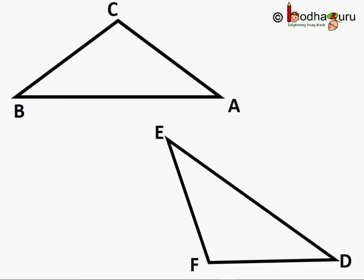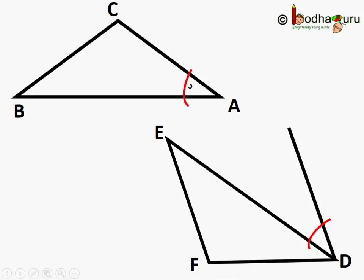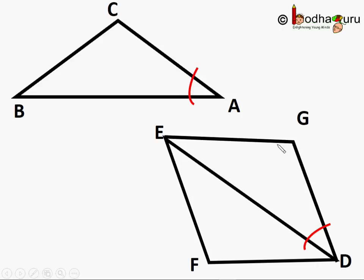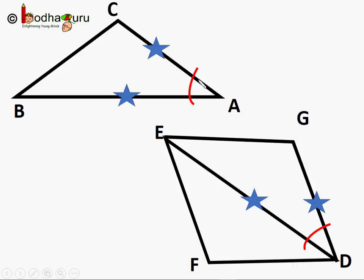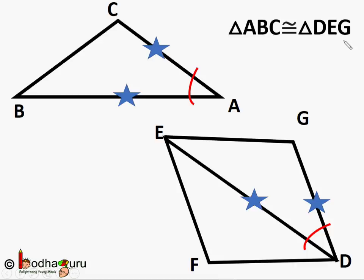In triangle ABC and DEF, AB is equal to DE, BC equal to EF, and CA equal to FD, and we need to prove they are congruent. So we draw an angle equal to angle BAC at point D, and make the arm equal to AC, meaning GD equal to AC. We join points E and G. In triangle ABC and DEG: AC equal to DG (we made it that way), AB equal to DE (given), and angle BAC equal to angle EDG (we drew it that way). So triangle ABC and DEG are congruent by the SAS rule.